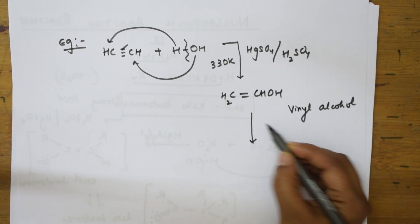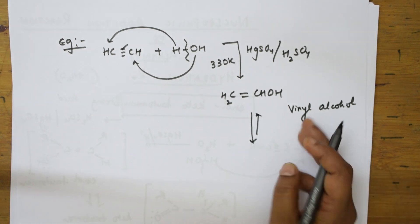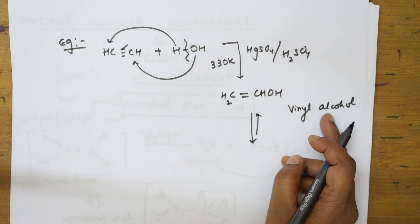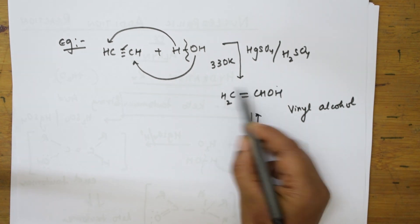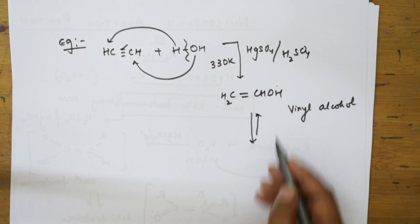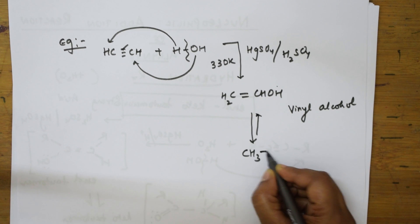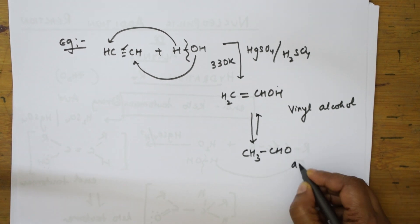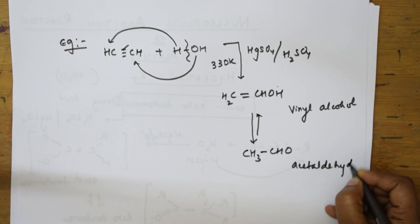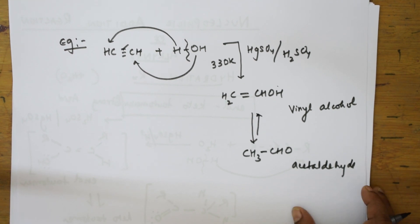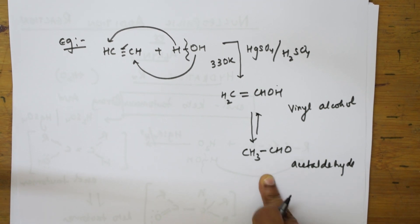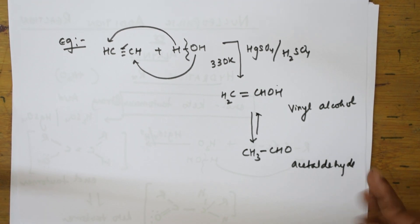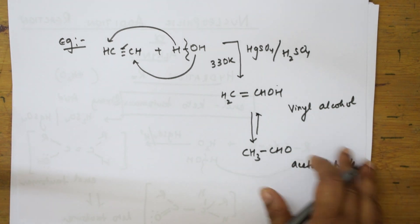Vinyl alcohol is the enolic form. It exists in equilibrium with another compound. The hydrogen shifts to the adjacent carbon: CH2=CH–OH becomes CH3–CHO, which is acetaldehyde. So acetaldehyde is the keto (aldehyde) tautomer. This is how keto-enol tautomerism is explained using the hydration reaction of acetylene.